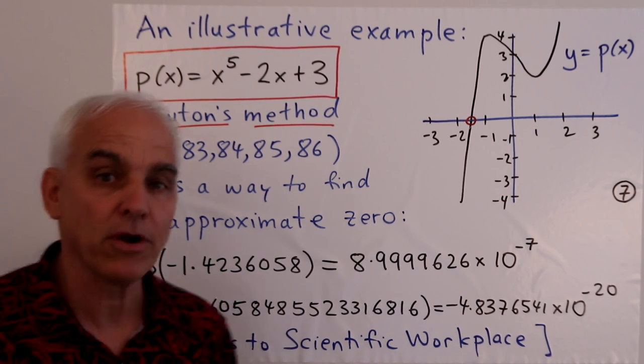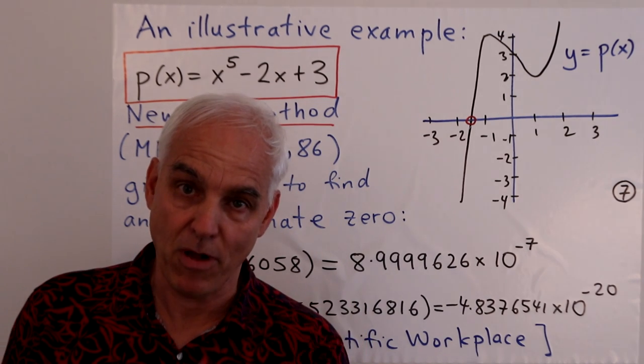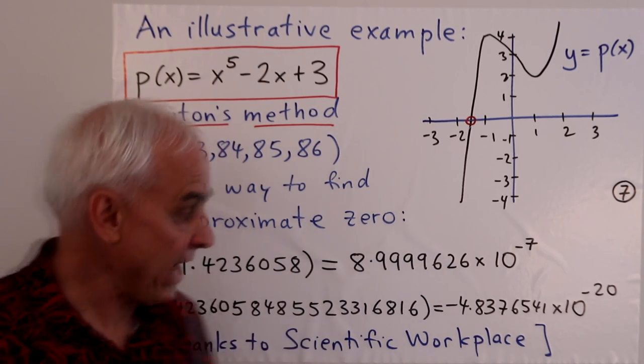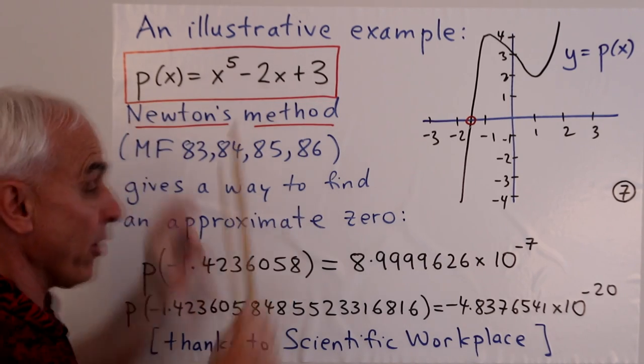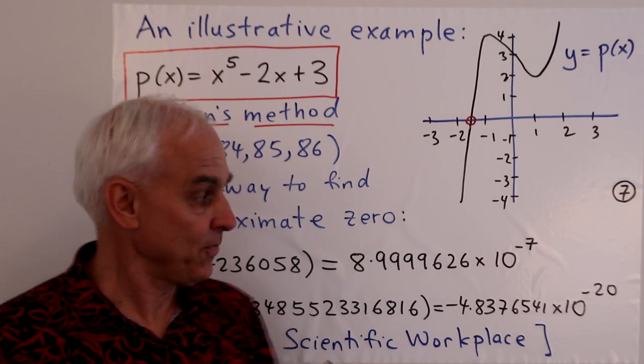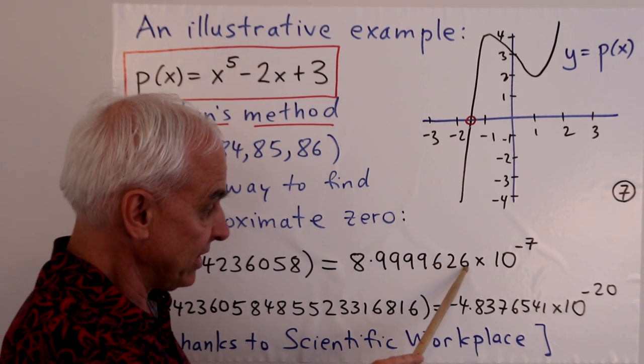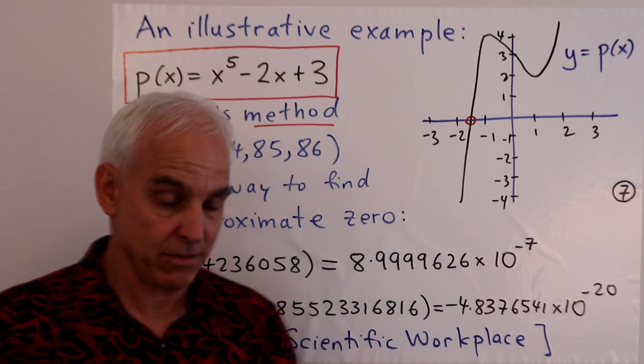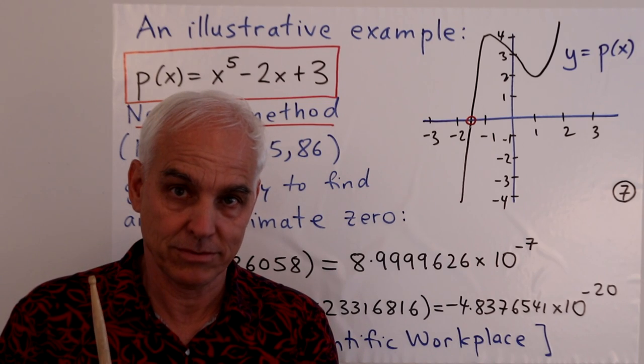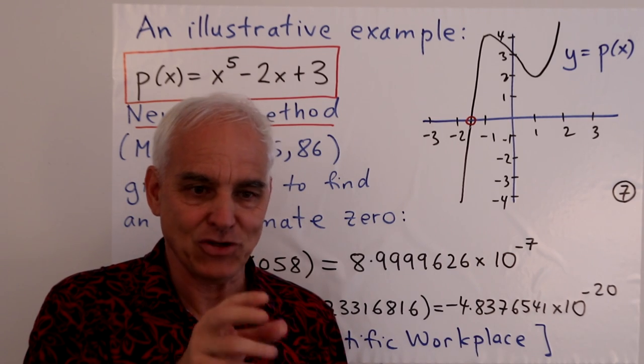So if I ask it for eight decimal places, something like that, then it will tell me that a zero or a solution to p(x) = 0 is given by minus 1.4236058. That, according to my computer, is a solution to the equation p(x) = 0. In other words, that's a root or zero of the polynomial. Great. But if I want to check, and I actually take this exact value and plug it in here, and get my computer to evaluate that, it does not give me zero. It evaluates it, again, to eight decimal places as 8.9999626 times 10 to the minus 7. That's a relatively small quantity, but it's definitely not zero.